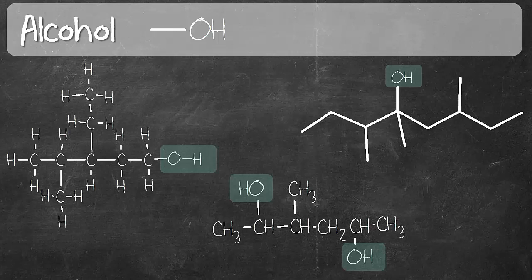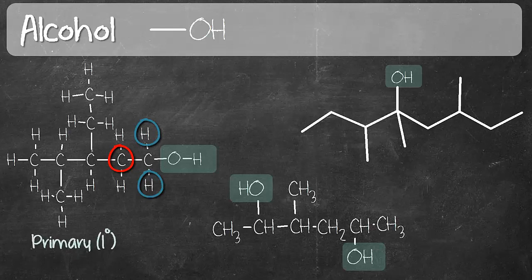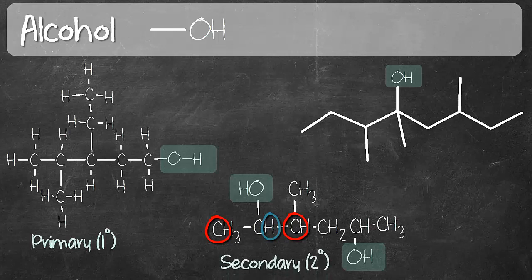Sometimes you may be required to classify the type of alcohol that you have, and you can do so by looking at the carbon which is directly connected to the OH. In the first structure, that carbon is connected to one carbon and two hydrogens, and that makes it a primary alcohol. In the second structure, the carbon directly connected to the OH group is connected to two carbons and one hydrogen, so two carbons — that makes it a secondary alcohol.